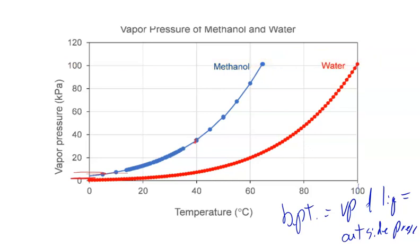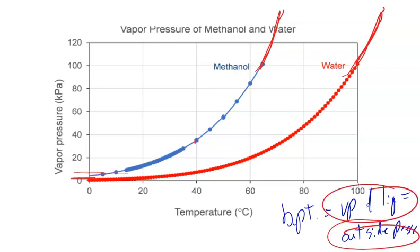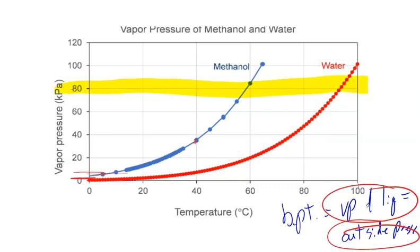If we increase the outside pressure — like in a pressure cooker — the vapor pressure has to climb higher to meet it, so the temperature required increases, and boiling points go up. Conversely, on top of a mountain where outside pressure is lower, the vapor pressure of the liquid only needs to reach that lower value, requiring less energy. The boiling point of water drops to around 94–95°C, and methanol drops from the high 60s to right around 60°C.